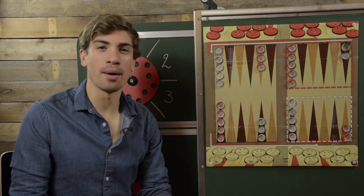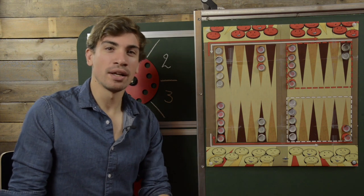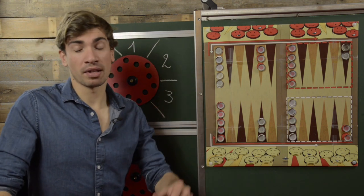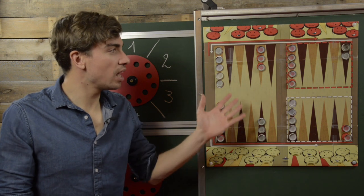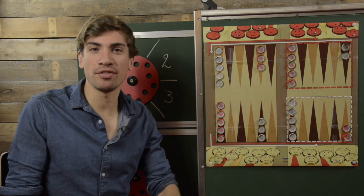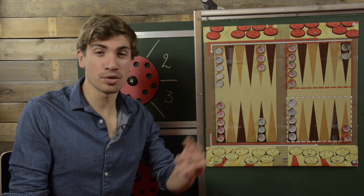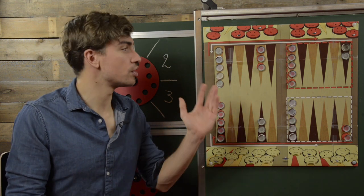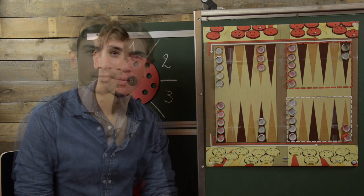You will need the backgammon board game, you will need two dice — very important — and you will also need 15 red and 15 white bottle caps to start the game. You will also need two players for this game, so let us have a look at the game rules right now.